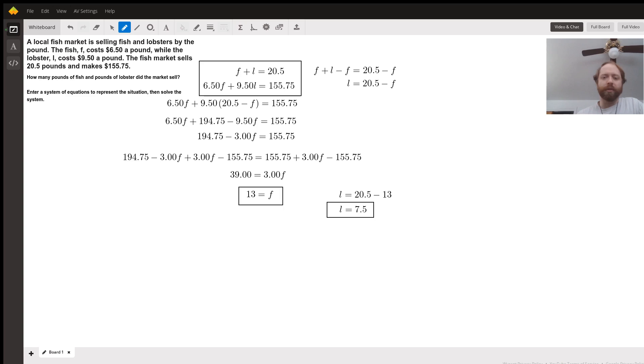As we distribute that through, we get that $9.50 times 20.5 minus F is $194.75 minus $9.50 times F. We're going to combine those like terms there to get that it's $194.75 minus $3.00 times F equals $155.75.